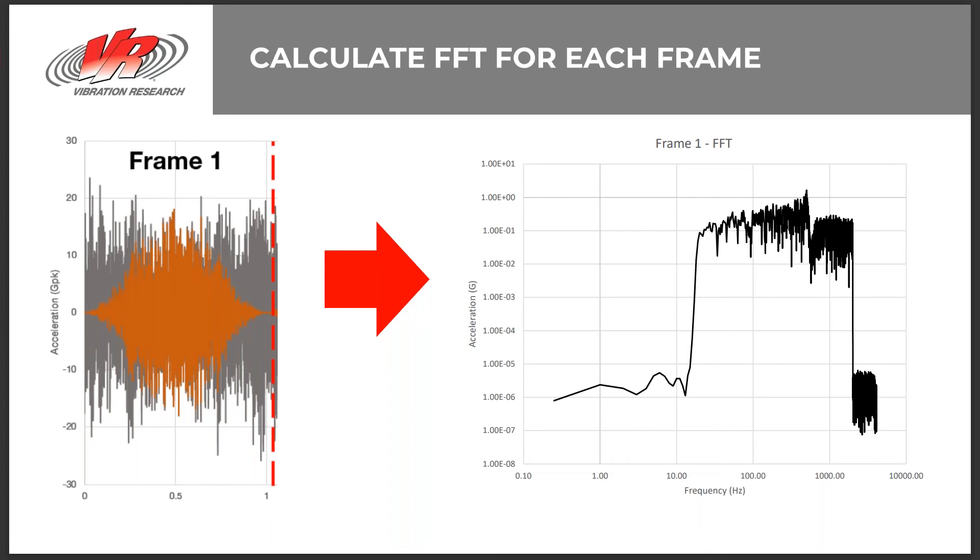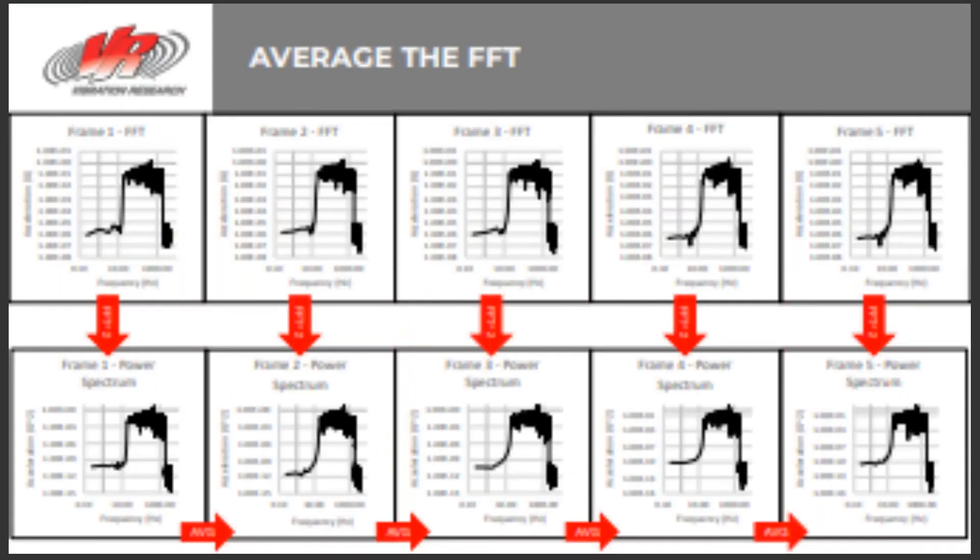There are certain factors that can be applied to the windowing function for different purposes. If the goal of this process was to simply generate an FFT, a weighting factor to ensure one G peak of the time domain data is equal to one G peak on the FFT. When generating a PSD, the window function is normalized to preserve the input power.